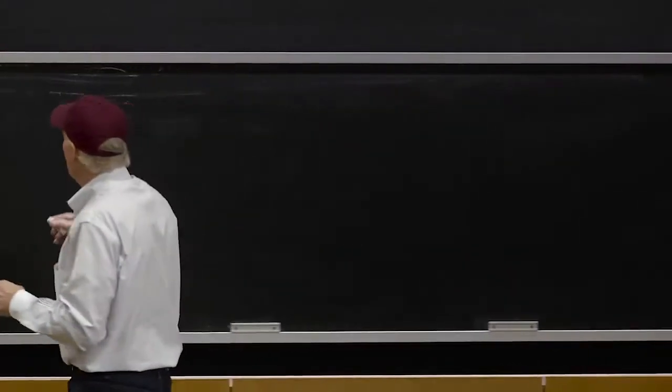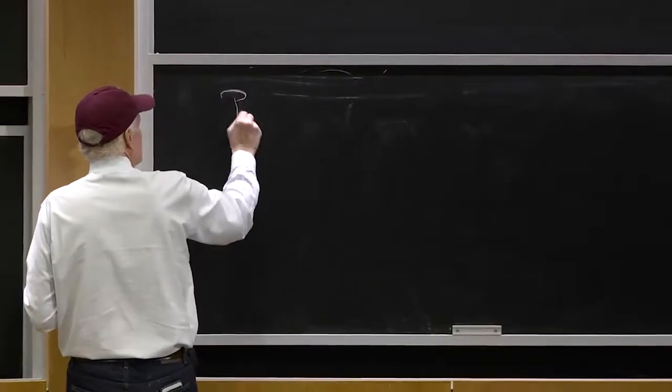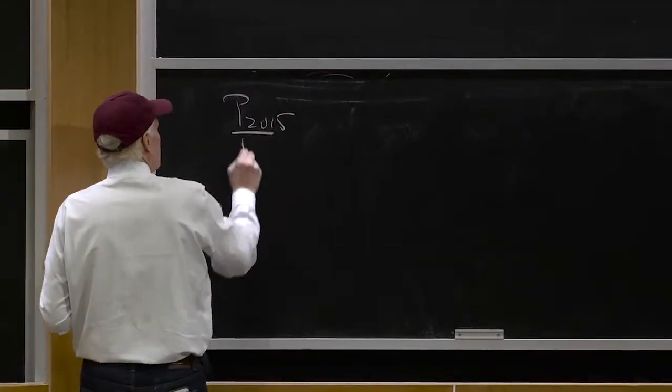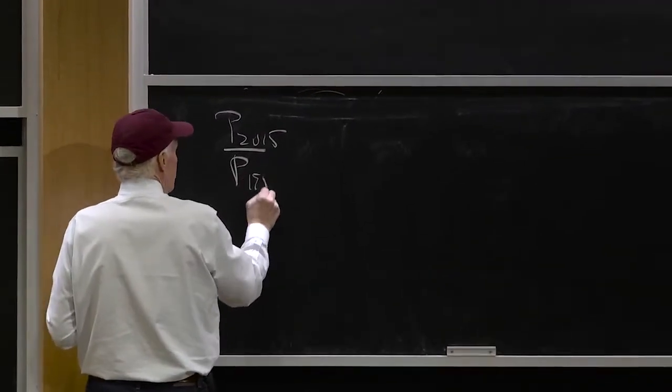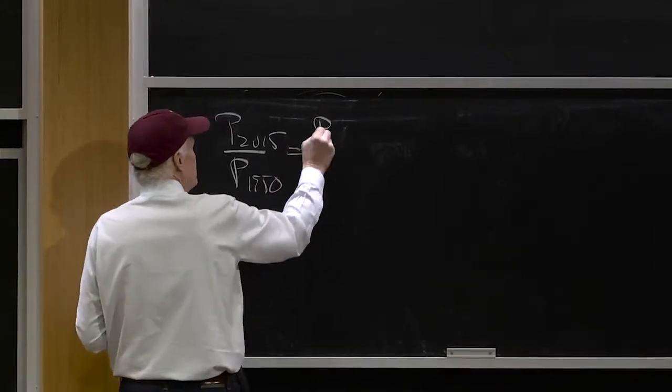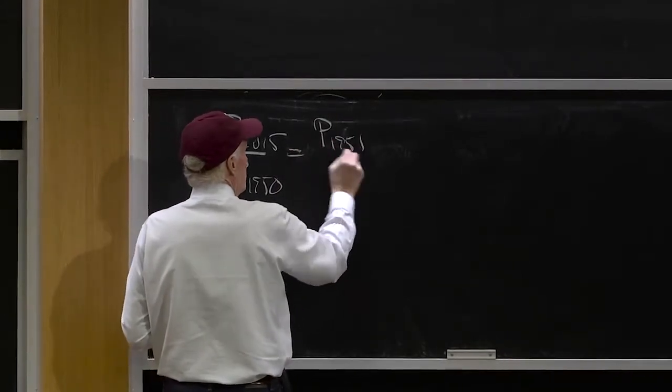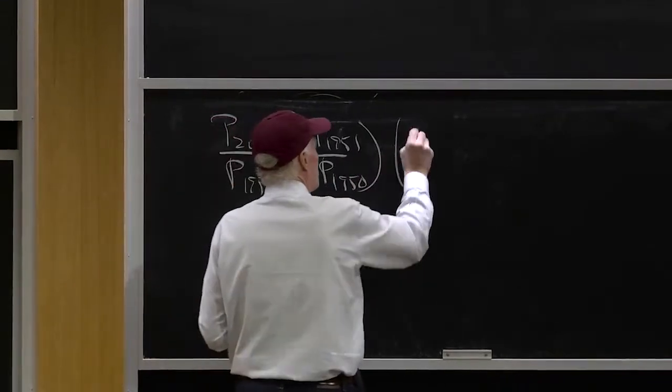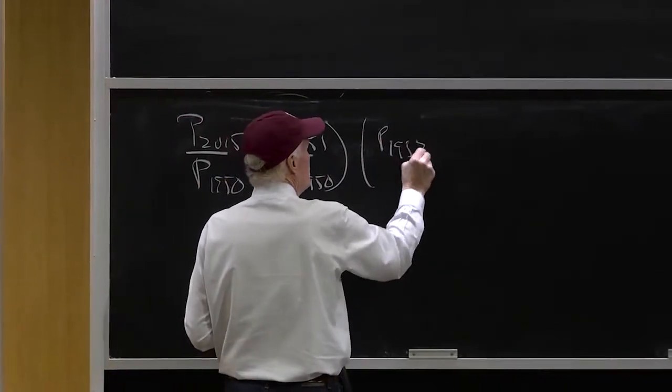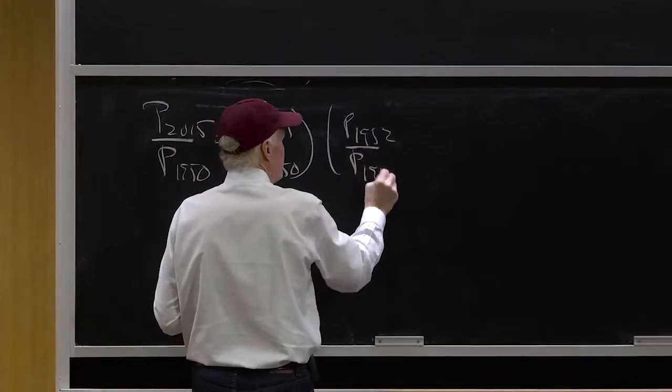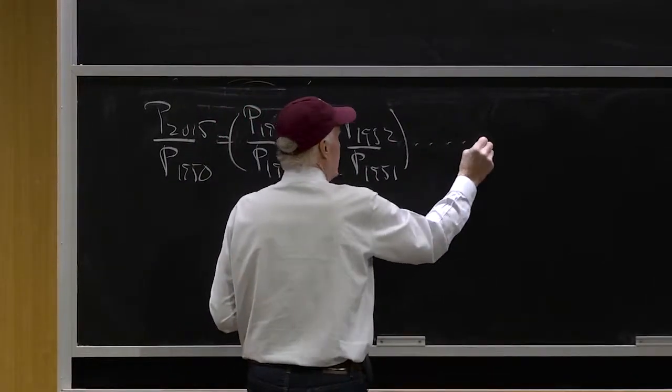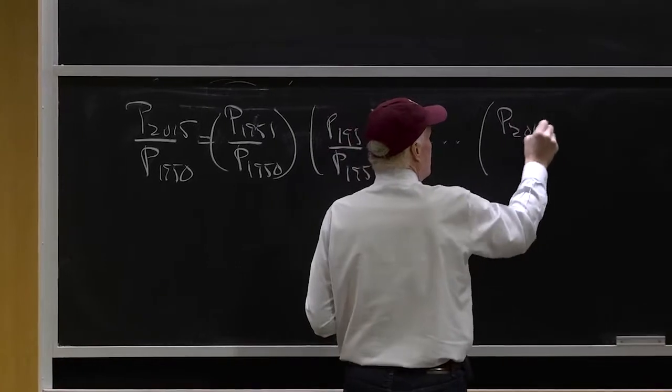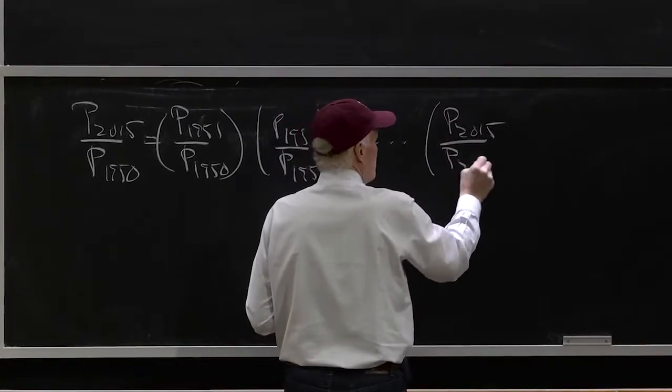So one thing we might do is you might say the price in 2015 divided by prices in 1950 would be the price in 1951 over the price in 1950, times the price in 1952 divided by the price in 1951, dot dot dot, all the way up to the price in 2015 divided by the price in 2014.